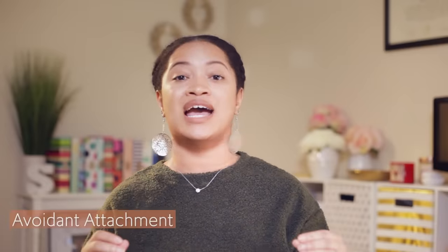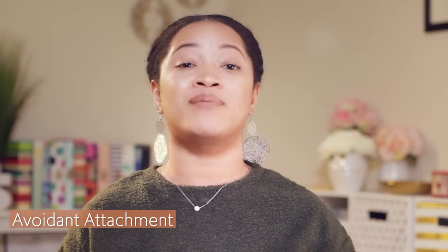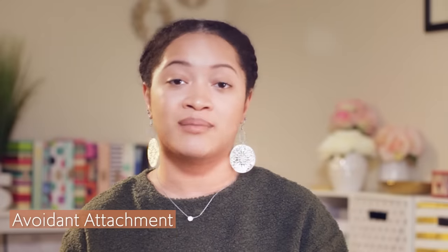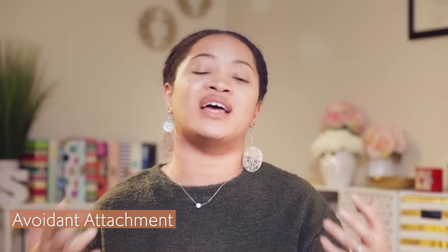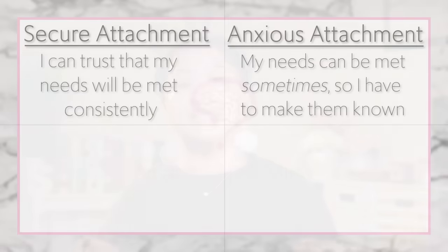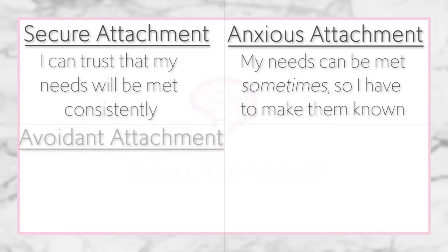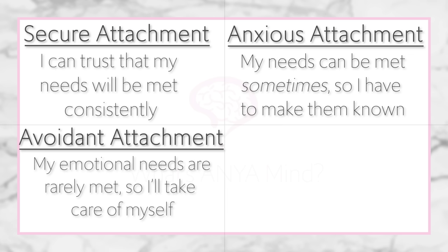With avoidant attachment, if a parent left, the baby showed no emotional response, and when the parent returned, it didn't put them at ease — you wouldn't see the comfort you'd expect from any baby with a solid attachment. As adults, people with avoidant attachment have learned that it is much safer not to let anyone in, not to trust anyone, not to let anyone see them sweat, rather than being vulnerable and trusting.